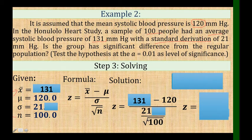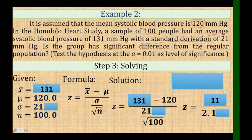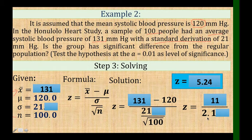Put the values into the formula: Z equals (131 minus 120) over (21 over the square root of 100). First solve: 131 minus 120 equals 11, and 21 divided by the square root of 100 equals 2.1. Then divide the two: 11 divided by 2.1 equals 5.24.